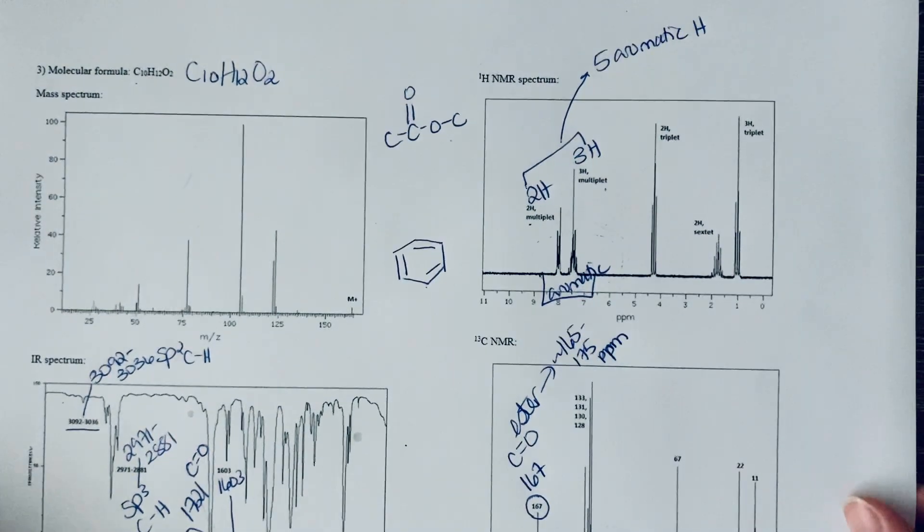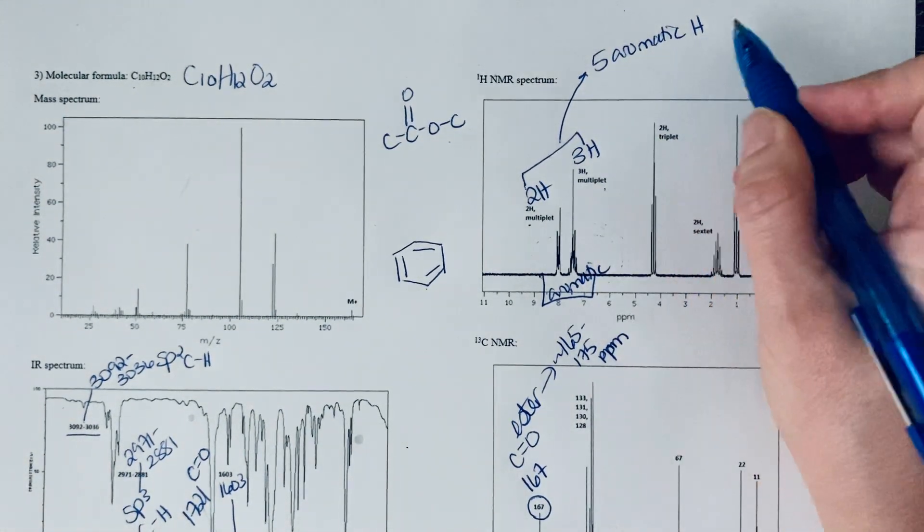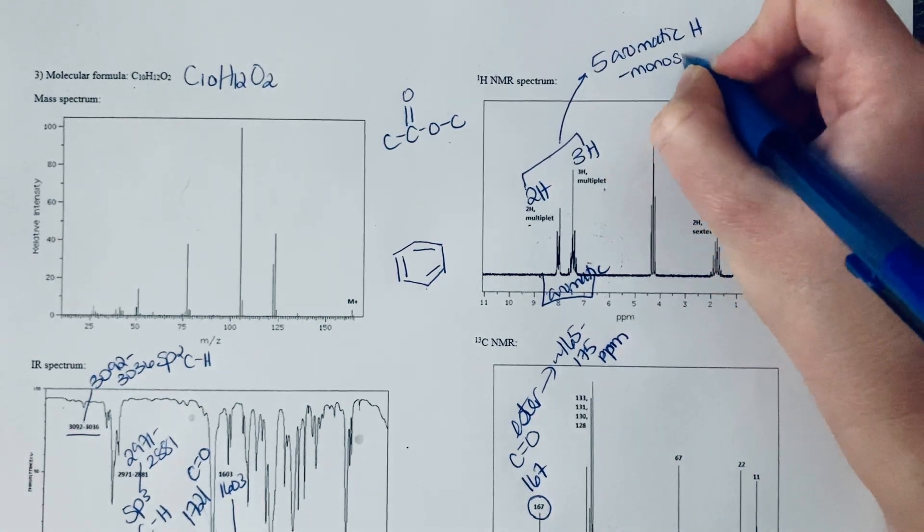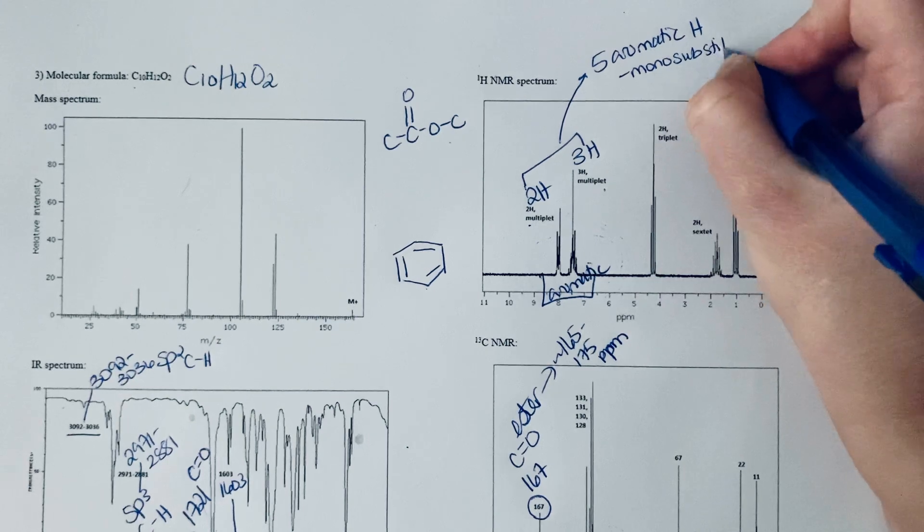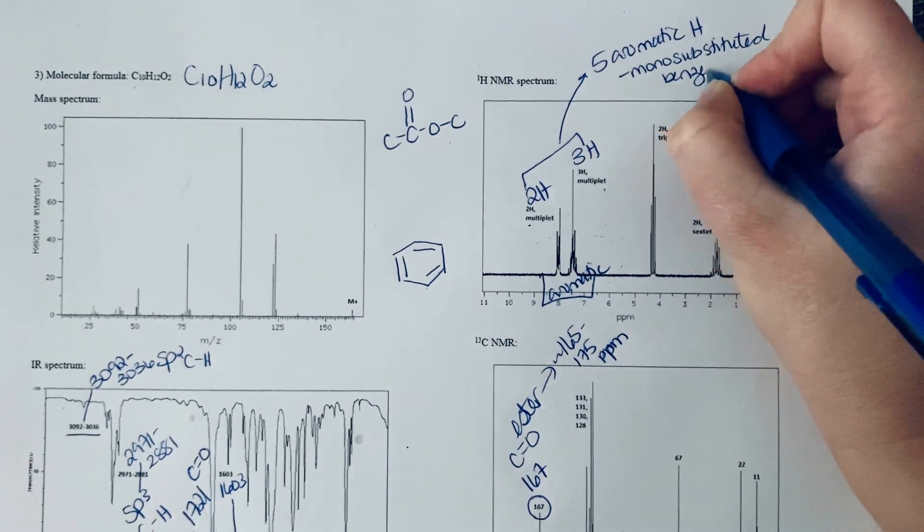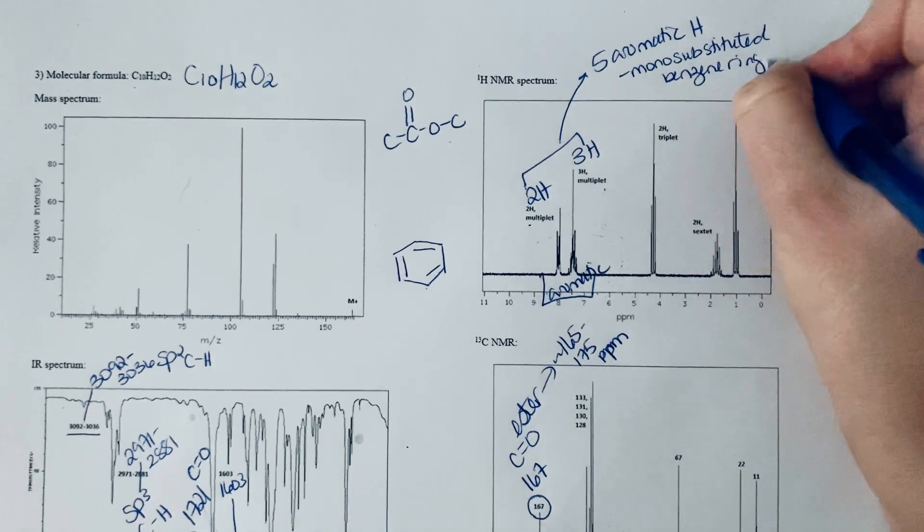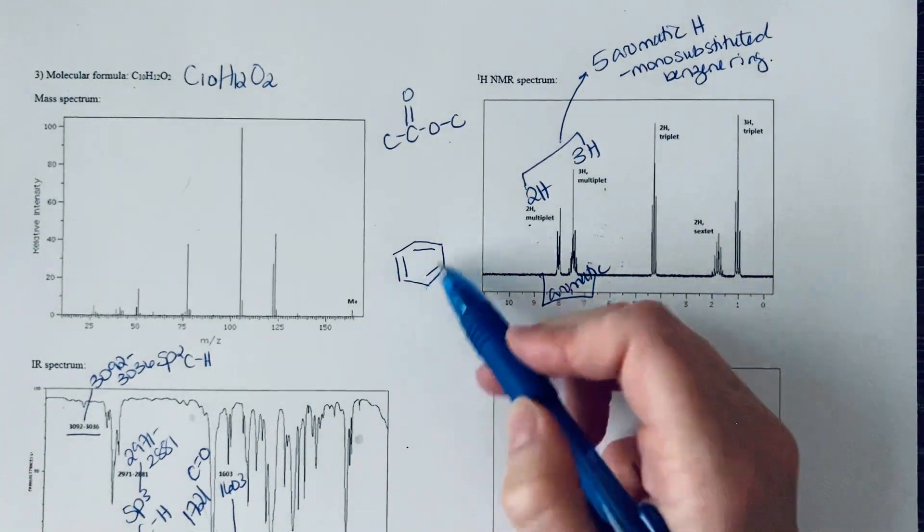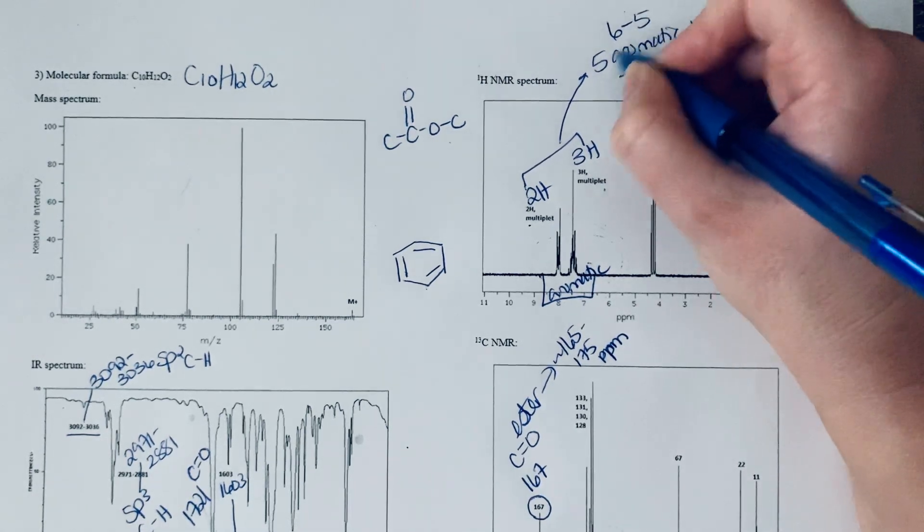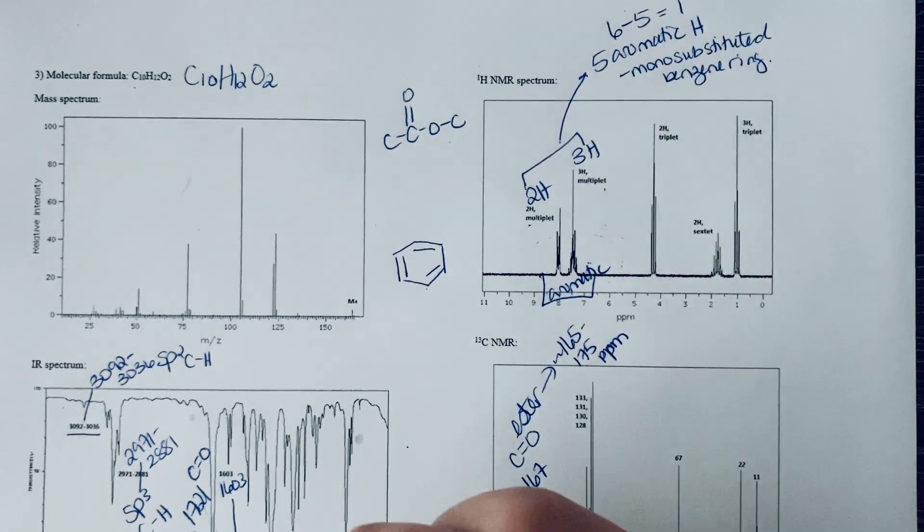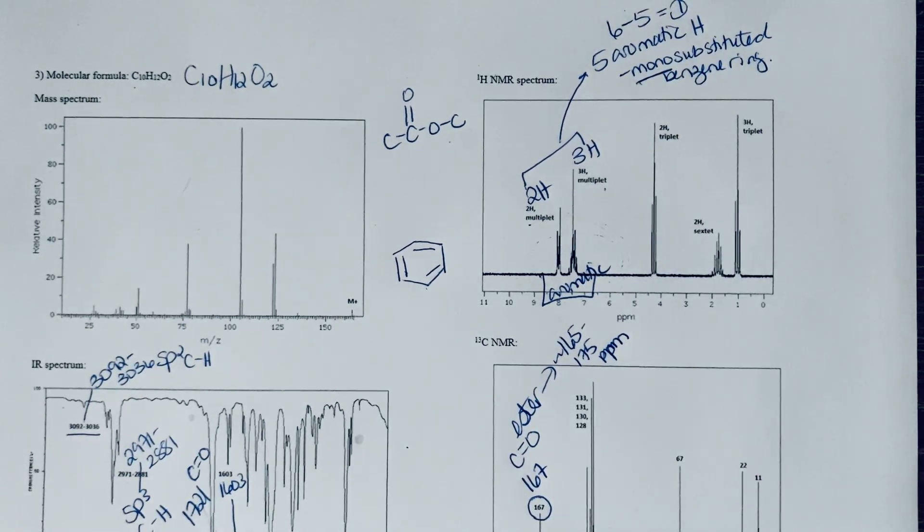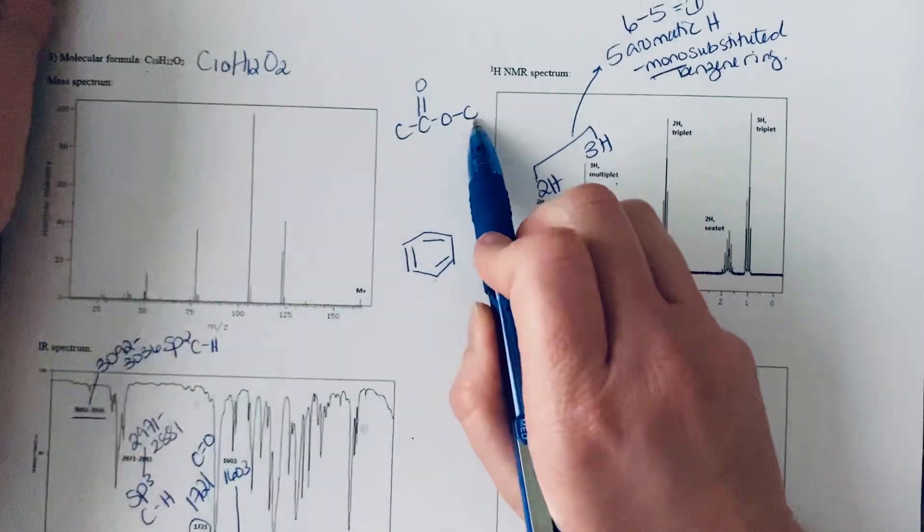A total of five aromatic hydrogens tells me that I have a mono-substituted benzene ring. If it was an unsubstituted benzene it would have six hydrogens. Six minus five means that I have replaced one of them, and that's why I'm saying it's a mono-substituted benzene ring.